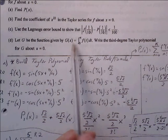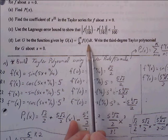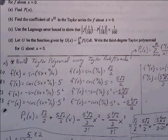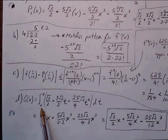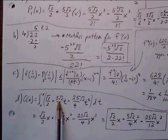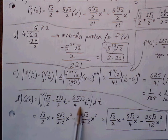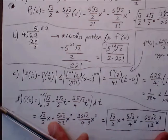Part D: let G be the function given by G(x) = the definite integral from 0 to x of f(t) dt. Write the third degree Taylor polynomial for G about x = 0. We take the definite integral of the Taylor polynomial we found: using power rule, we get √2/2 · x + 5√2/2 · x²/2 + 25√2/4 · x³/3. This is our third degree Taylor polynomial for G about x = 0.